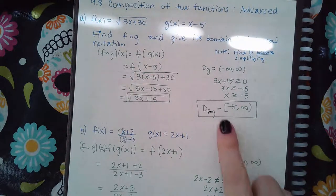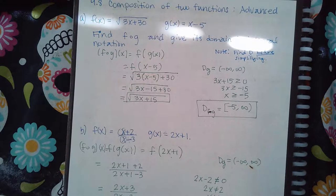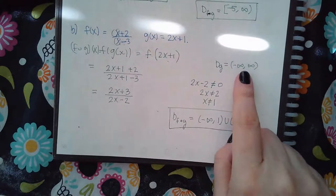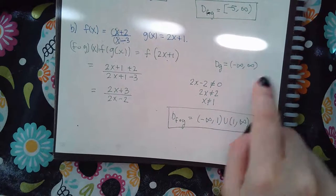Okay? So I just said that everything bigger than negative five is good. Now, over here, same thing. I took the inside function and took that domain. So this is my potential domain.